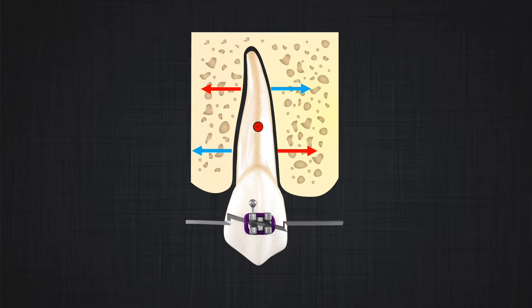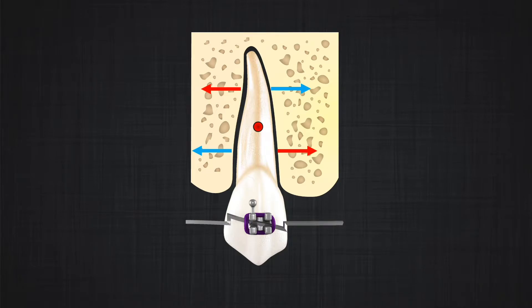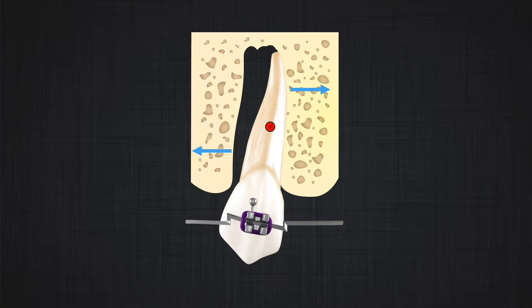From one side the wire applies a force, and from the other side the periodontium applies a force to the tooth, keeping it in balance. So why does the tooth eventually move? We have a biological factor: the bone gradually goes through remodeling, and therefore the reaction forces start to disappear. In response, the balance around the tooth is gone, and based on Newton's first law the tooth will accelerate in the direction of the couple that was applied and it will rotate.